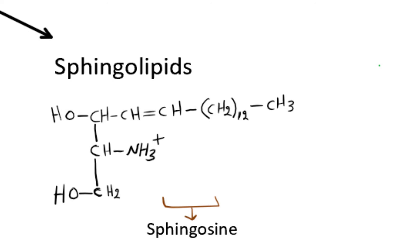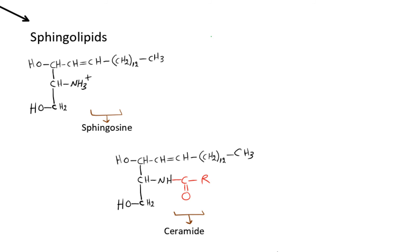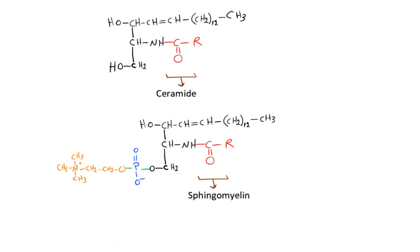Sphingolipids are derivatives of the lipid sphingosine, and sphingosine is the backbone of the sphingolipid. Sphingosine has one long unsaturated tail, unsaturated due to its double bond. When the amino group interacts with the fatty acid carboxyl, it results in forming an amide bond, producing ceramide, which is the fundamental structural unit common to all sphingolipids. The sphingolipid can get more complex when a polar head group is esterified by interacting with the hydroxyl group of ceramide.